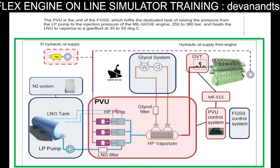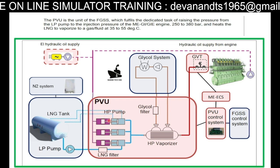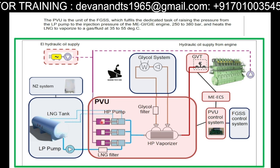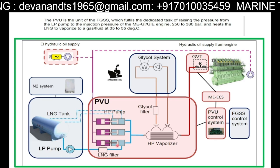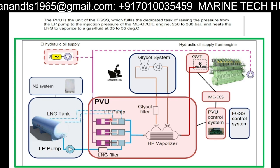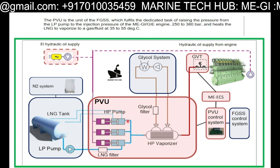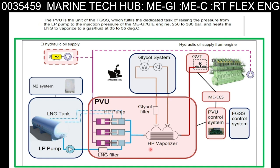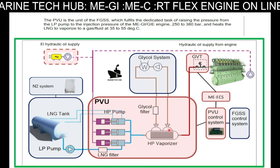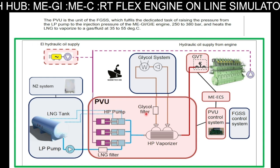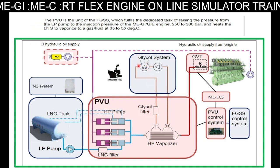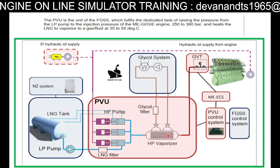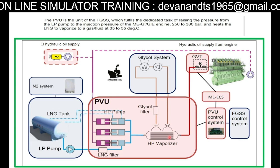Then it goes to the HP pump — high pressure pump, or hydraulic actuator. This HP pump converts the liquid into gas. We use an HP vaporizer — a high pressure vaporizer — using a glycol filter. The glycol is heated and circulated by a pump to heat the liquid and convert it into vapor.